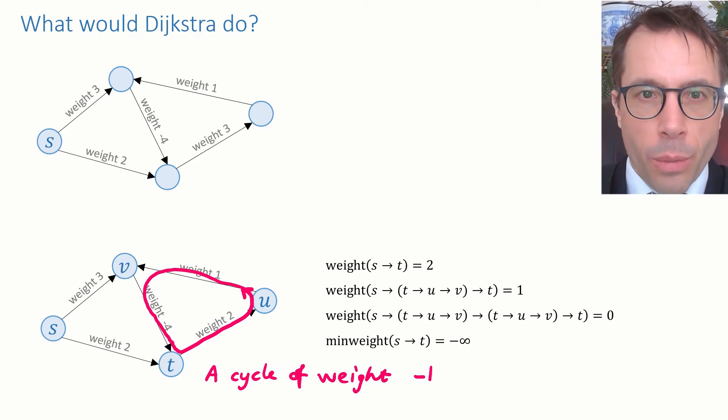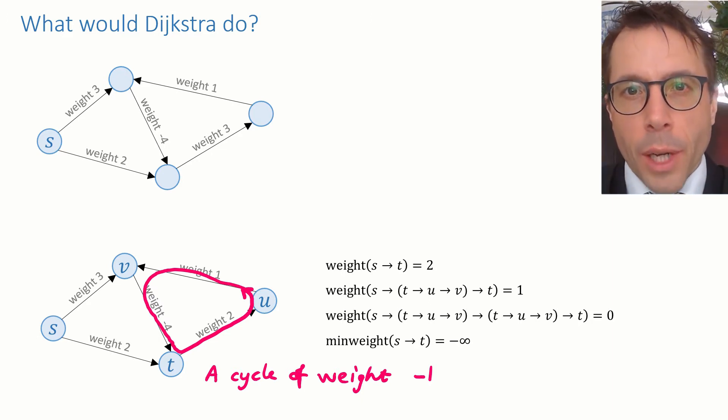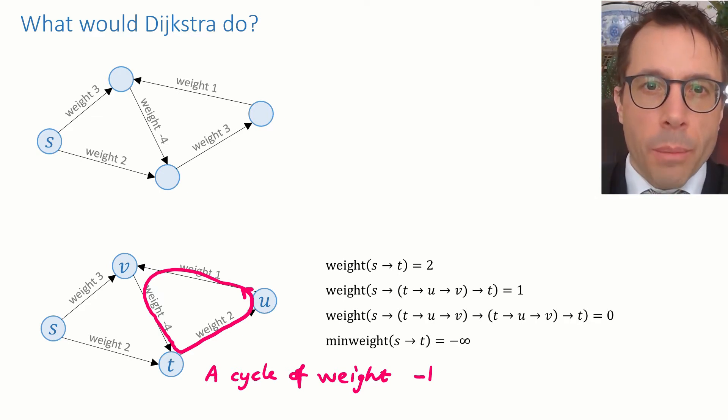And this here is the culprit. It's this cycle of negative weight, weight minus 1 in this case. If there is a cycle of negative weight, then we can get min weights equal to minus infinity for at least some of the vertices. And this is what basically made Dijkstra's algorithm get stuck in an infinite loop.